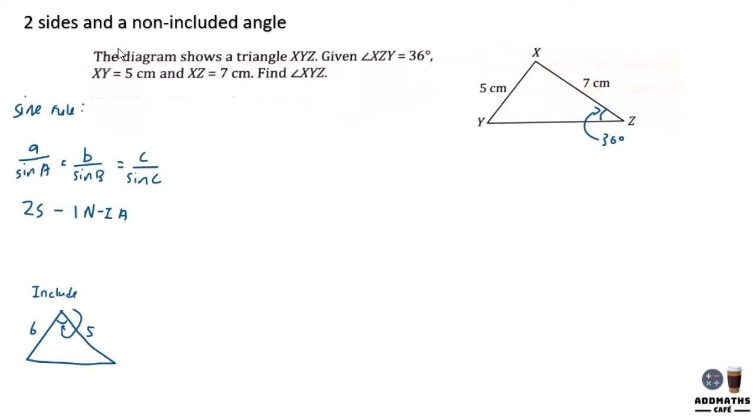So this is an included angle. So to find this value XYZ, this part, we know that sine 36, this part is to the opposite over 5.